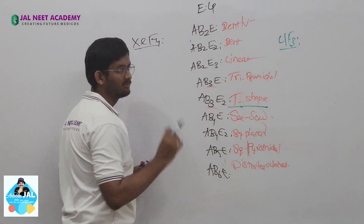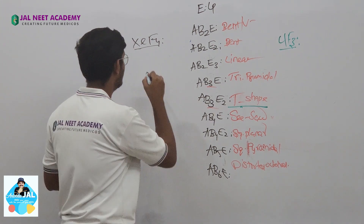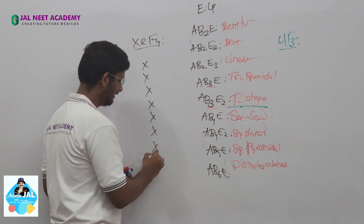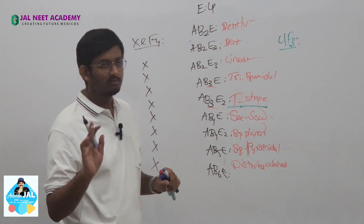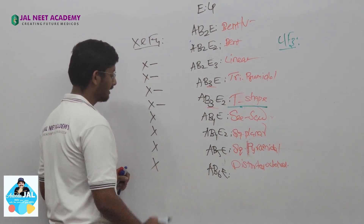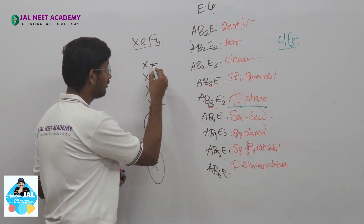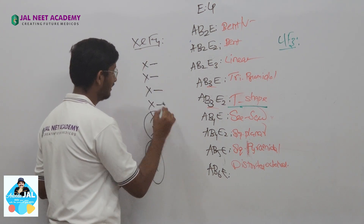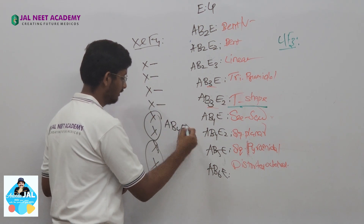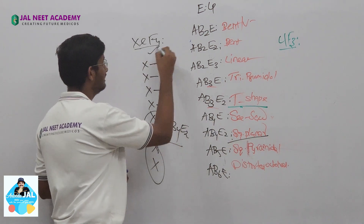Next, XeF₄. Xenon is a p-block element. Fluorine can make only single bonds, so we have 4 bond pairs. Lone pairs are 2, so this is AB₄E₂. What is AB₄E₂? Square planar. So the shape of XeF₄ is square planar.